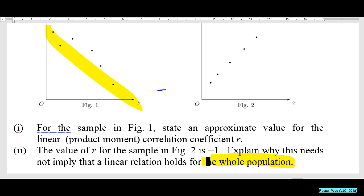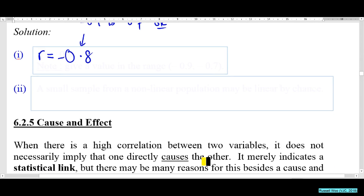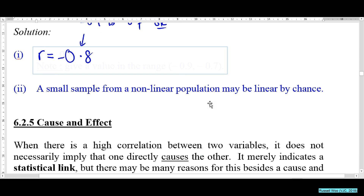The explanation is: it could happen by chance. Because it's a very small sample, the five points happening to be linearly related could be coincidental and may not represent the entire population.